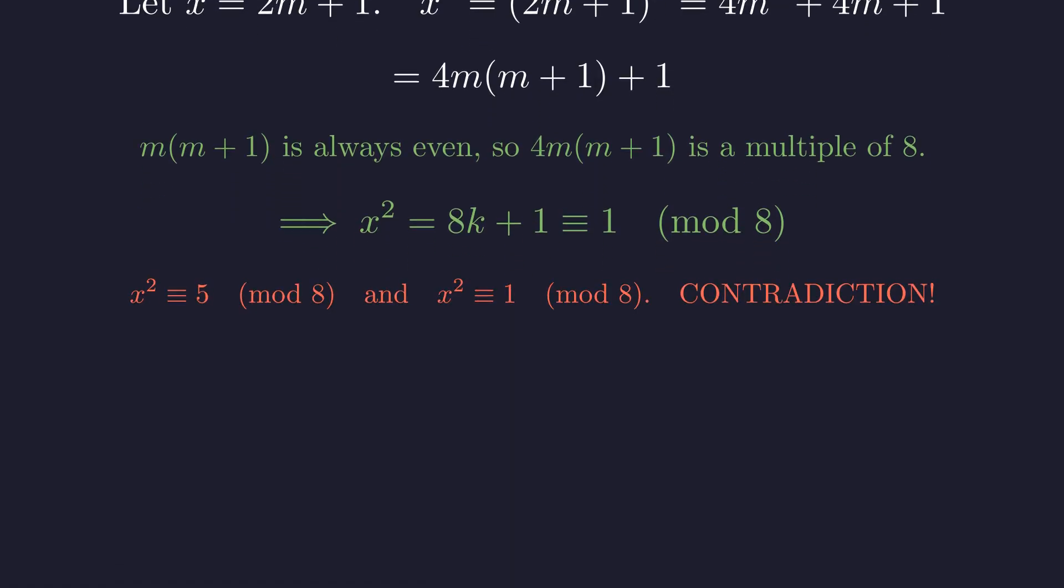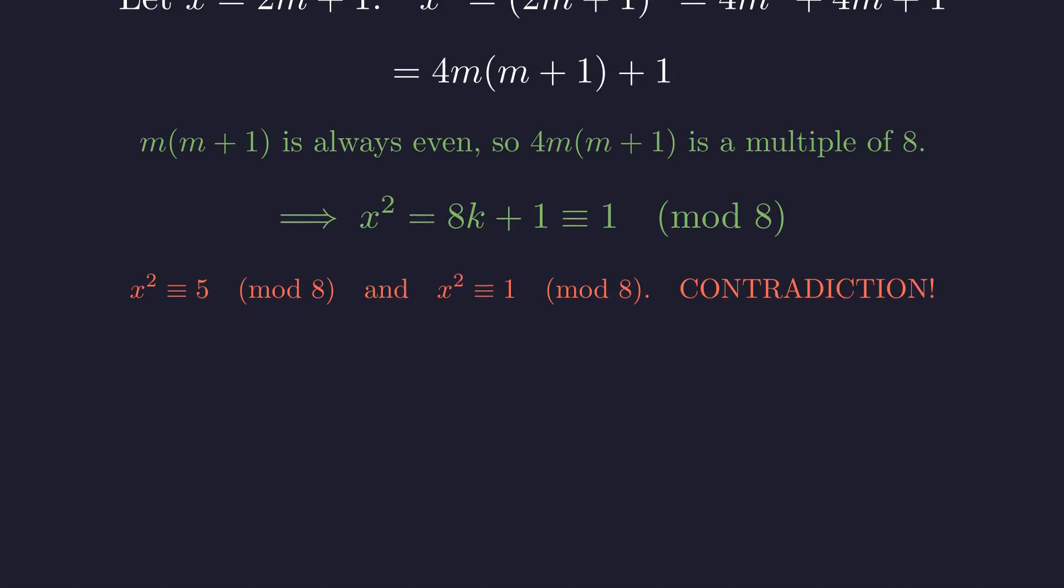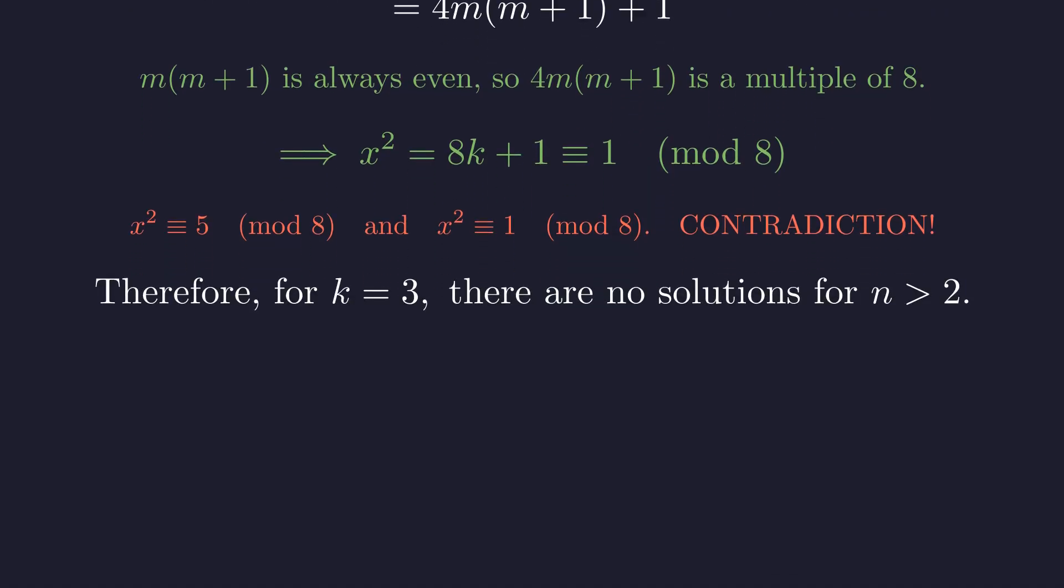And this gives us our contradiction. Our equation requires x squared to be 5 modulo 8, but we've just proven that the square of any odd number must be 1 modulo 8. This is impossible. This contradiction proves that no integer solutions can exist for n greater than 2 when k is 3.